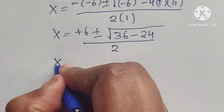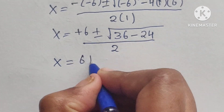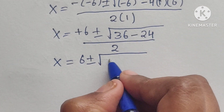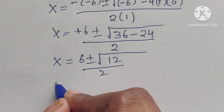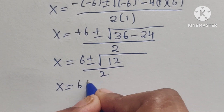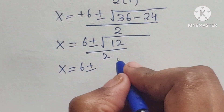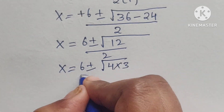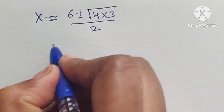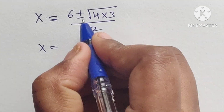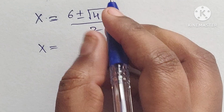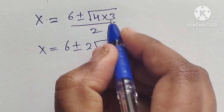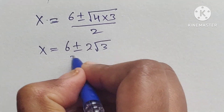Simplifying inside the square root: 36 minus 24 equals 12, which can be written as 4 times 3. So x equals 6 plus or minus square root of 4 times 3, divided by 2. The square root of 4 is 2, so we have x equals 6 plus or minus 2 times square root of 3, divided by 2.